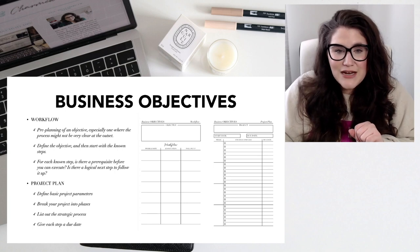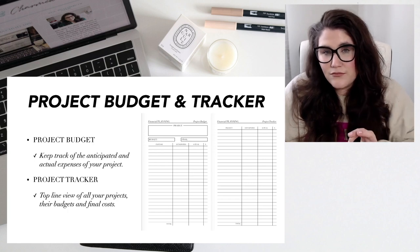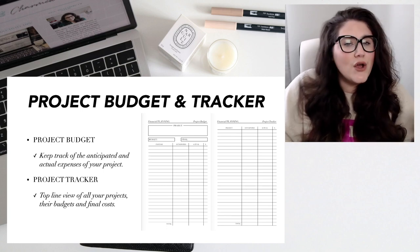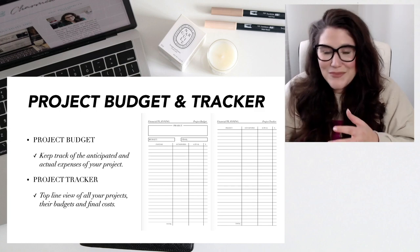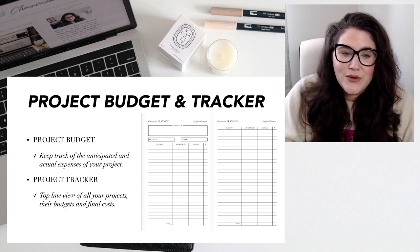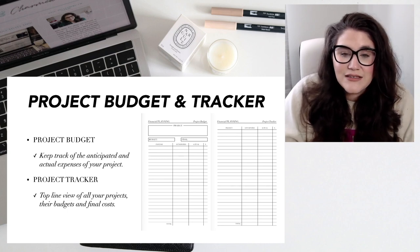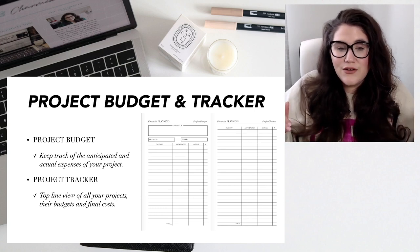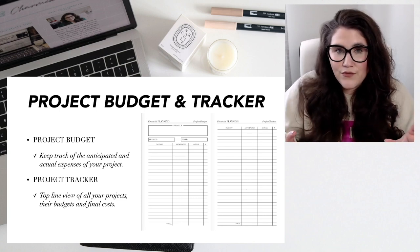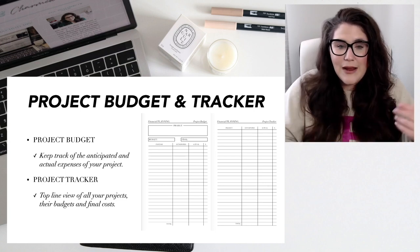Also within the business objectives are the project budget and tracker. For many of us, when you do a project for your business it costs money — creating a new product costs money, building out a website costs money. So here you can actually keep track of anticipated and actual expenses of your project. On the project tracker, you get a top-line view of all the projects you have going on, their budgets, and the final costs. This is going to be really helpful for you when it comes to tax time, having this financial information organized by project.